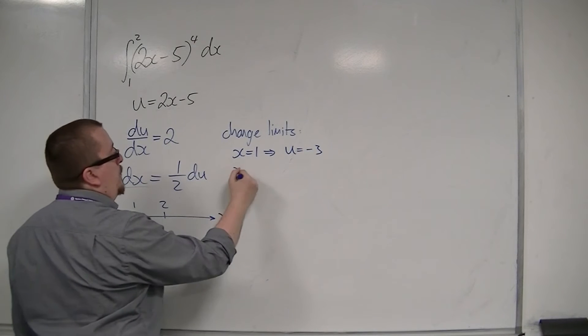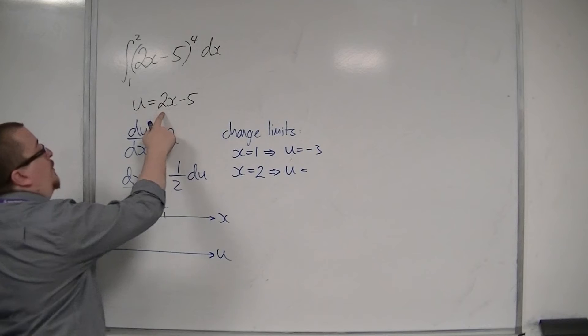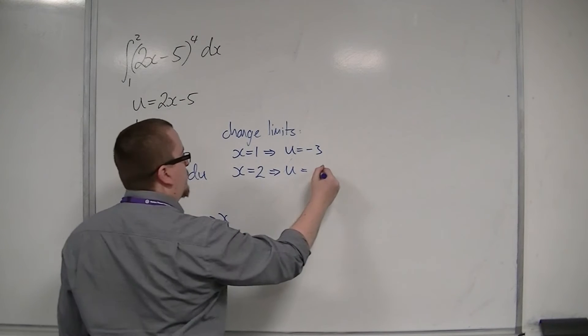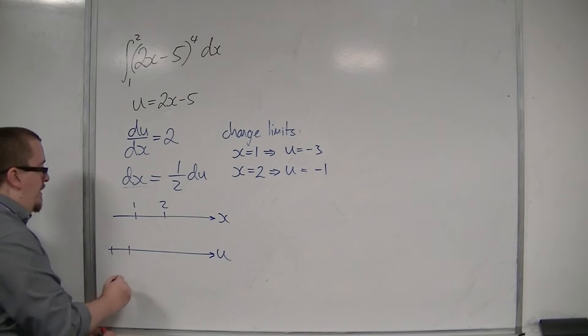And when x is 2, 2 lots of 2 take away 5 is minus 1. So, actually, for the u-axis, I've got minus 3 and minus 1.